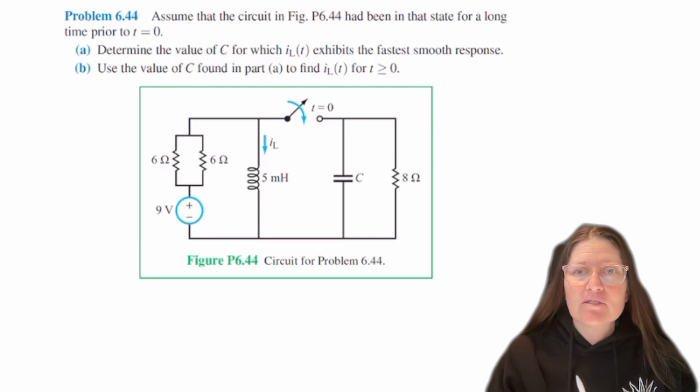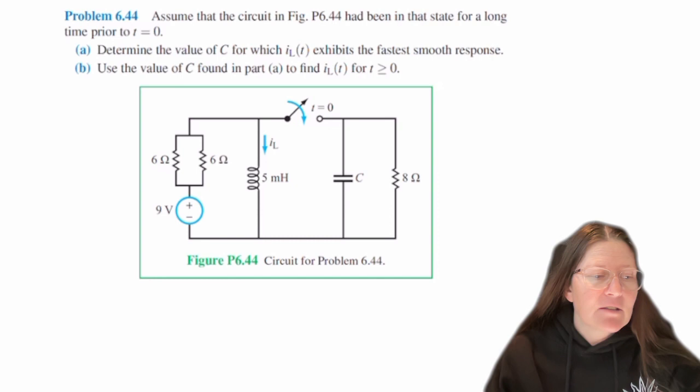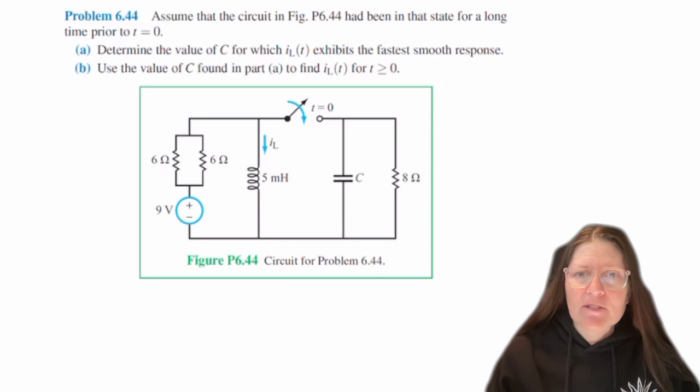Critically damped is going to give you a smooth response. So if you want the fastest, typically you're going to want to go to the one that's going to spike up, and so that wouldn't be critically damped. And so we want to do critically damped in this case.